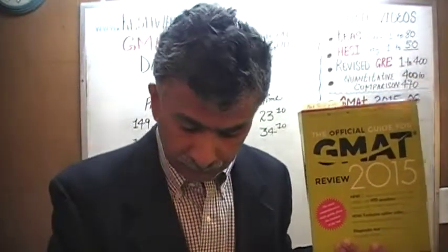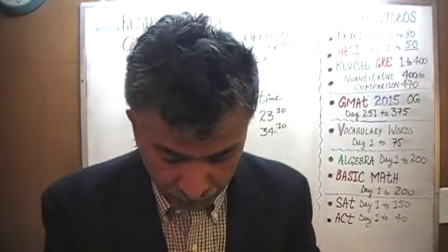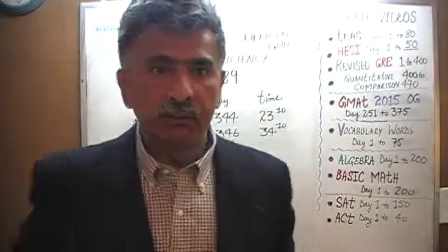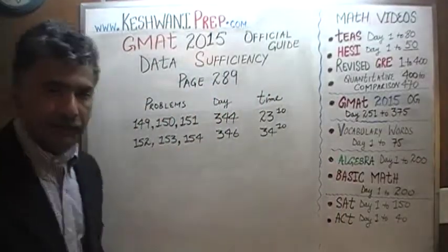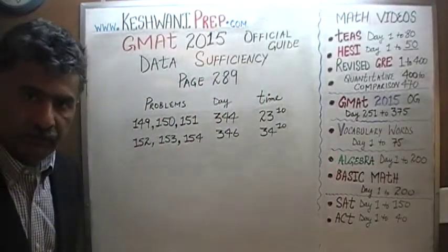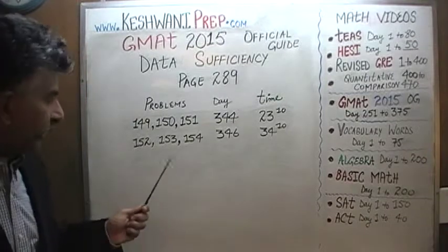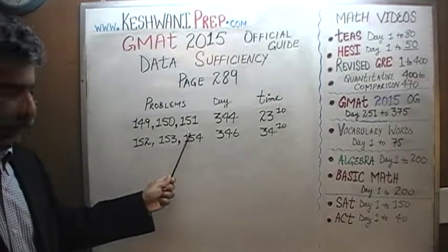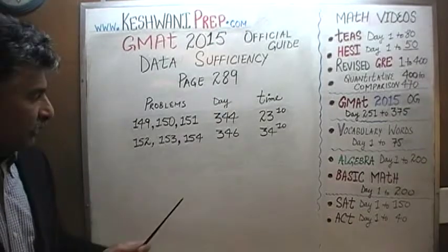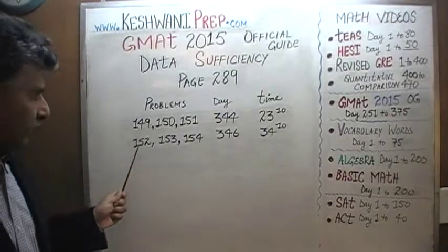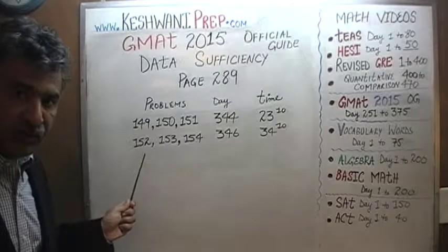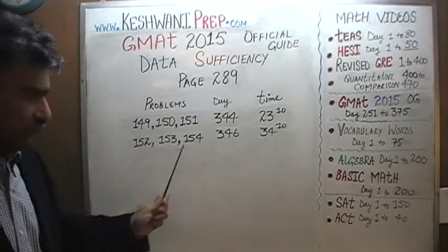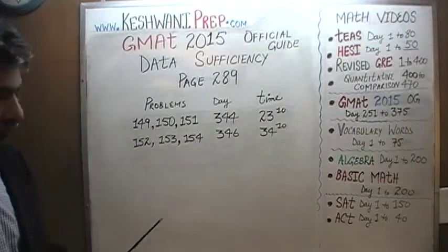Let's take a look at all the data sufficiency problems. All the data sufficiency problems appear on page number 289 — there are altogether six of them. The first three problems on the page, problem numbers 149, 150, and 151, you will find the solutions on day number 344. The second set of three problems in the second column, problem numbers 152, 153, and 154, you will find the solutions on day number 346.